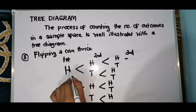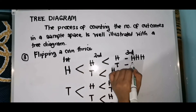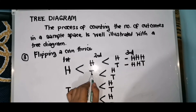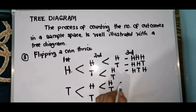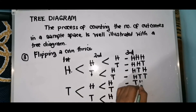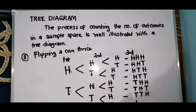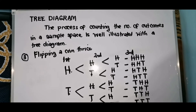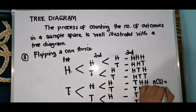Combining all outcomes, we have: head-head-head, head-head-tail, head-tail-head, head-tail-tail, tail-head-head, tail-head-tail, tail-tail-head, and tail-tail-tail. I hope you can follow — it's just a pattern. Counting them: 1, 2, 3, 4, 5, 6, 7, 8. Therefore, the number of elements in the sample space is 8.